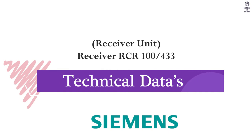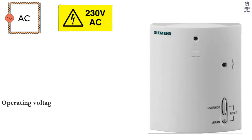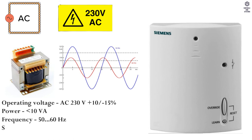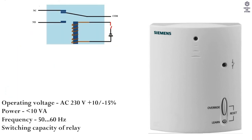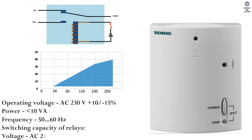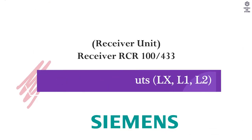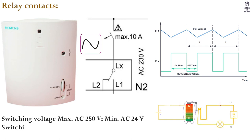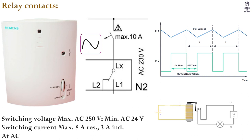Technical data for the receiver unit. Operating voltage is AC 230V +10% / -15%. Power is less than 10 VA. Frequency is 50 or 60 Hz. Switching capacity of relays: voltage AC 24 to 250V; current 8A resistive or 3A inductive. Switching outputs are relay contacts. Switching voltage: maximum AC 250V, minimum AC 24V. Switching current: maximum 8A resistive, 3A inductive.